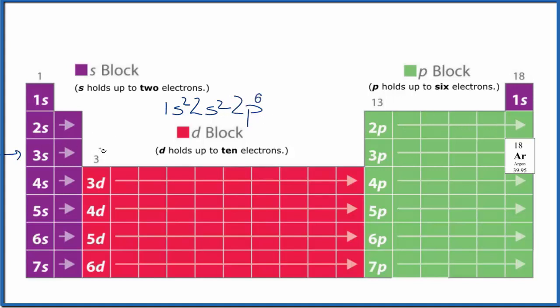Third energy level: 3s². And then in the p again, 3p. We have 1, 2, 3, 4, 5, 6. So we have 3p⁶.